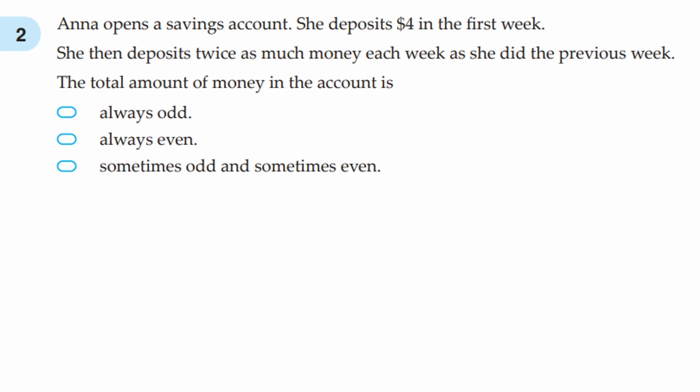Question number 2: Anna opens a savings account. She deposits 4 dollars in the first week. She then deposits twice as much money each week as she did the previous week. The total amount of money in the account is always odd, always even, or sometimes odd and sometimes even.